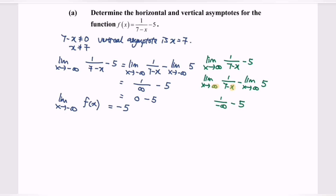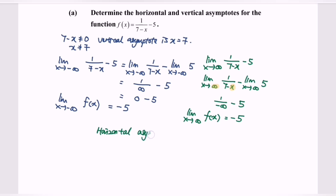So as a conclusion, the limit when x is approaching positive infinity for f(x), the value of y is approaching negative 5. Therefore, the horizontal asymptote is y equals negative 5.